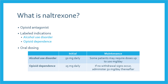Naltrexone falls into a class of medications known as opioid antagonists. It is FDA approved for the treatment of alcohol use disorder and opioid dependence. Although the dosing varies depending on the disease, the range is usually about 50 to 100 milligrams per day; however, doses up to 300 milligrams daily can be used.